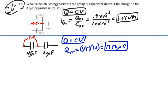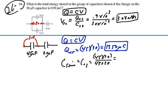We could calculate the energy on each capacitor individually, but let's find the equivalent capacitance, which will also have the same charge. The equivalent capacitance for the series combination is product over sum: 45 times 20 over 45 plus 20, which is 900 over 65, giving us 13.85 microfarads.